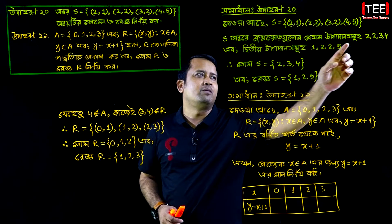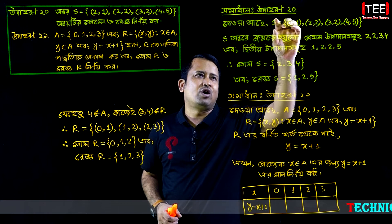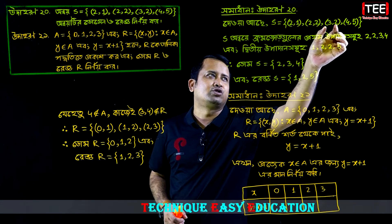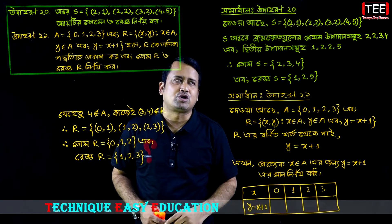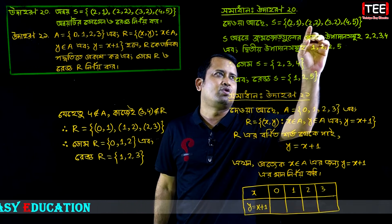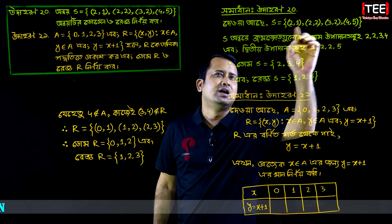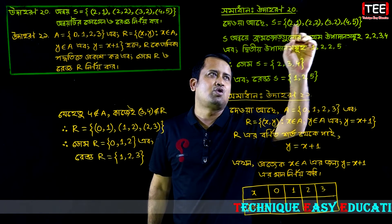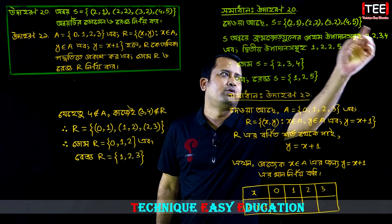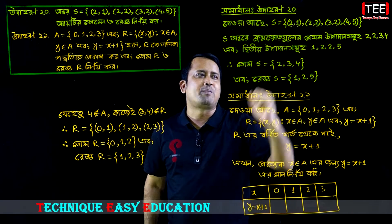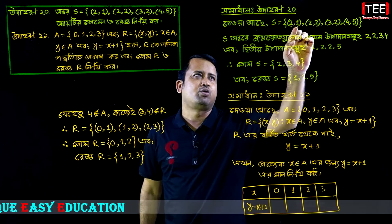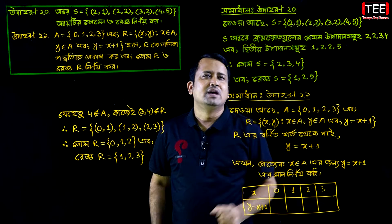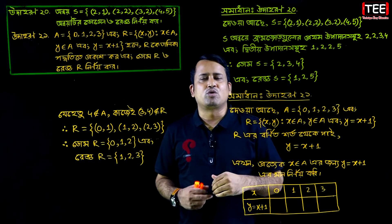If we are looking at the S equals to S sequence, the first thing we are dealing with is a crossword. As for the function of this function, we are saying that 1,2,2,3,4 is greater than 2,2,3,4. So we are going to express that 2,2,3,4 is greater than 2,3,4.